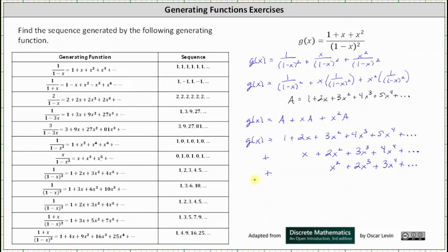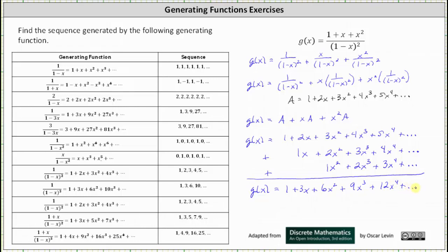Now we can determine g(x) by combining like terms. We have g(x) equals one plus three x plus six x squared plus nine x cubed plus 12 x to the fourth, and so on. From this we can determine the sequence, which is one, three, six, nine, twelve, and so on. I hope you found this helpful.